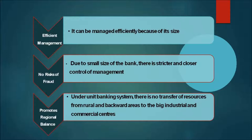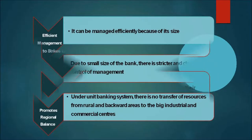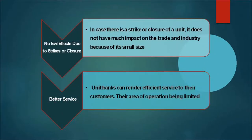In unit banking there are no evil effects due to strikes or closures. In case of a strike or closure of a unit, it does not have much impact on trade and industry because of its small size — it does not affect the entire banking system. In unit banking there is no chance of monopolistic practices. Since the size of the bank and area of operation are limited, it is difficult for the bank to adopt monopolistic practices. Moreover, with free competition, it will not be possible for the bank to indulge in monopolistic practices.